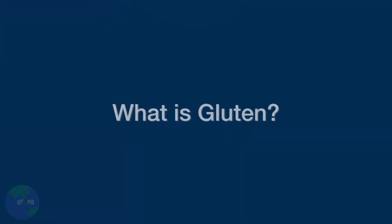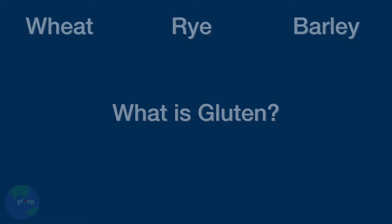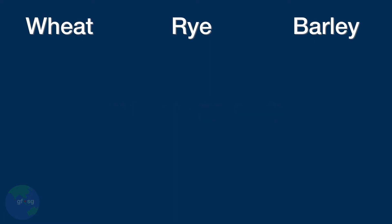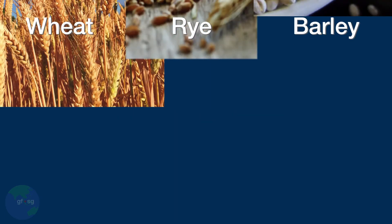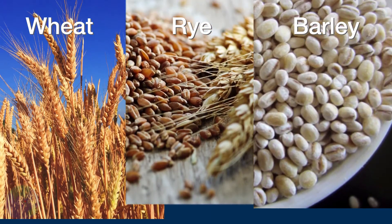What is gluten? Let's start at the beginning and look at what gluten is and where it is found. In short, gluten is a protein that comes from three grains: wheat, rye, and barley.